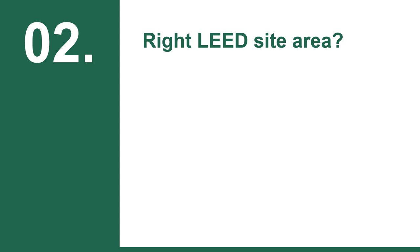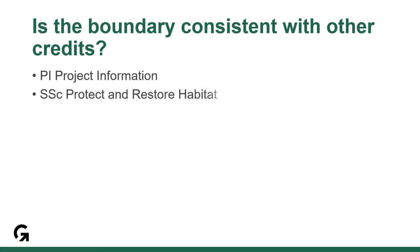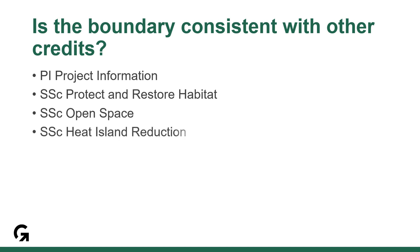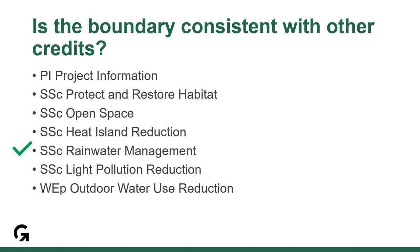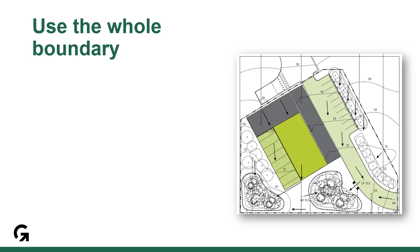The next thing we check is the site area. A number of credits require the project team to upload the LEED project site area, and one cross-check for our lead reviewer is to confirm the same boundaries are used for all applicable credits. It's not just about the LEED boundary itself, but considering whether all hardscape, softscape, and vegetation areas are consistent. Don't forget to use everything within your whole boundary in your calculations — all hardscape, landscaping, roof, etc.